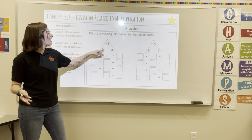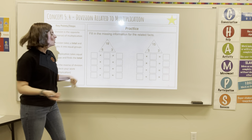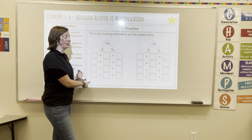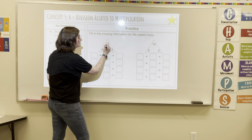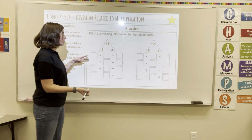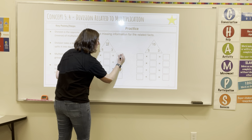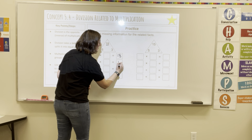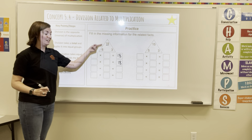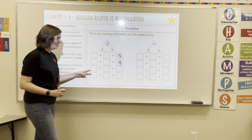So when we have our big number, our total, we can start filling in our fact families. 18 is my total. Multiplication gets to the total, and division starts with the total.